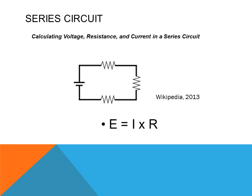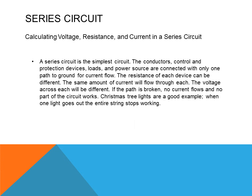Here's a diagram of a series circuit. It has two bulbs in series with each other. The power source is a battery. There's a fuse and there's a switch. Looking at Ohm's Law, it states that voltage equals the current times the resistance. So E equals voltage, I equals current flow, and R is the resistance. A series circuit is the simplest circuit — the conductors, controls, and protection devices in the system, such as loads and a power source, are connected with only one path for the current to flow.